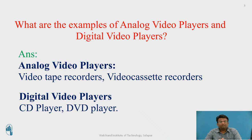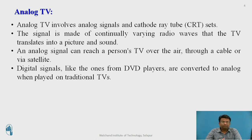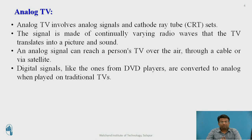Digital video players are CD players and DVD players. Analog television involves analog signals and cathode ray tube sets. The signal is made of continuously varying radio waves that the TV translates into picture and sound. The analog signal can reach a person's TV over the air, through cable, or via satellite.